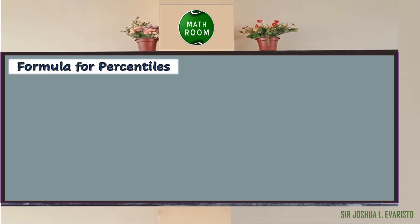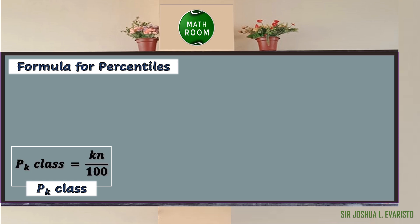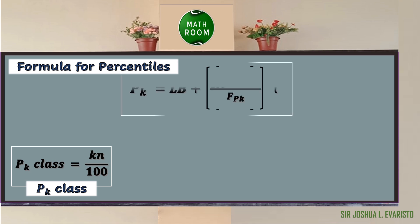At this moment, let us determine the formula that we are going to use to solve the percentile value for grouped data. In finding the value of a percentile, we need to determine first the P sub k class. The formula is: P sub k class is equal to k times n all over 100. Then we can proceed to the formula for percentile, which is P sub k equals the lower boundary plus the quantity k times n over 100 minus the less-than cumulative frequency before the percentile class, all over the frequency of the percentile class, times the